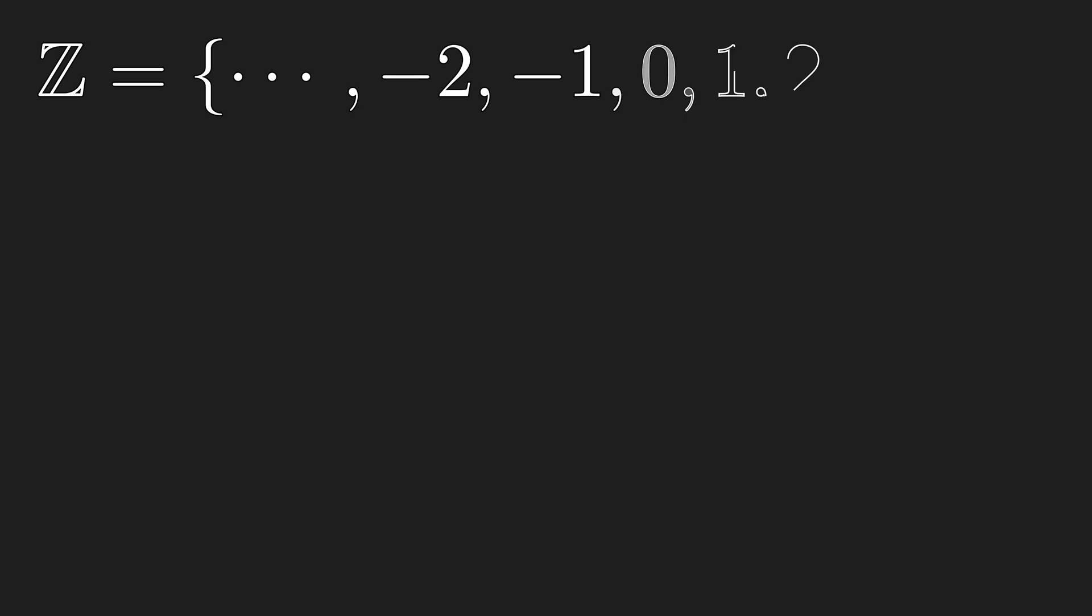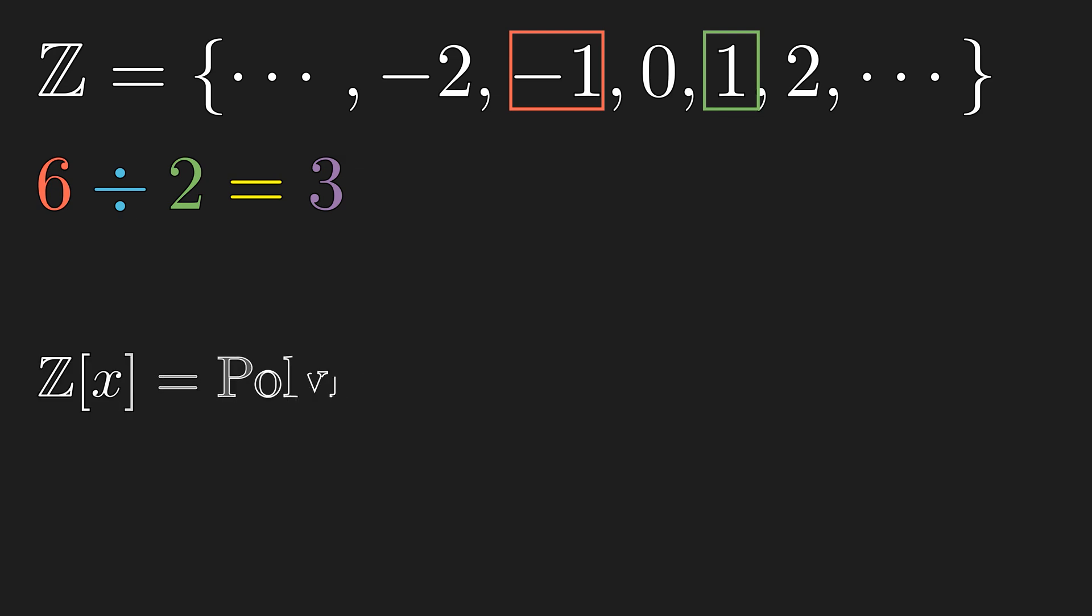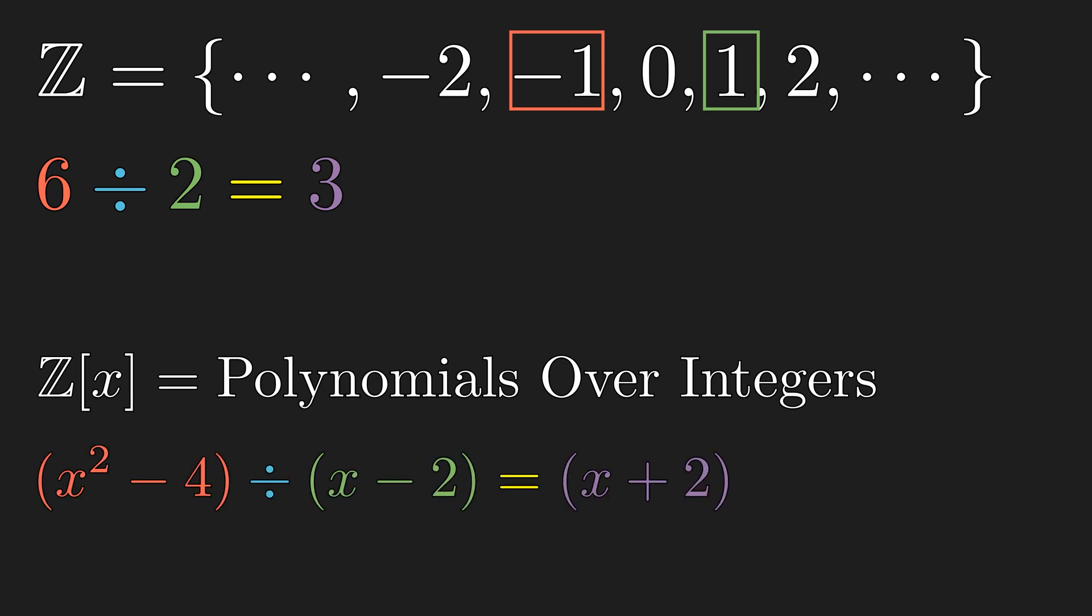But how about the integers? This ring only has two invertible elements, which are 1 and negative 1. So, using the previous notion of division as an operation, we can only divide by 1 or negative 1. But we know very well that 6 divided by 2 is 3 even without requiring 1 half in your ring. And over the polynomials over integers, we know that x squared minus 4 divided by x minus 2 is equal to x plus 2 without requiring rational functions.